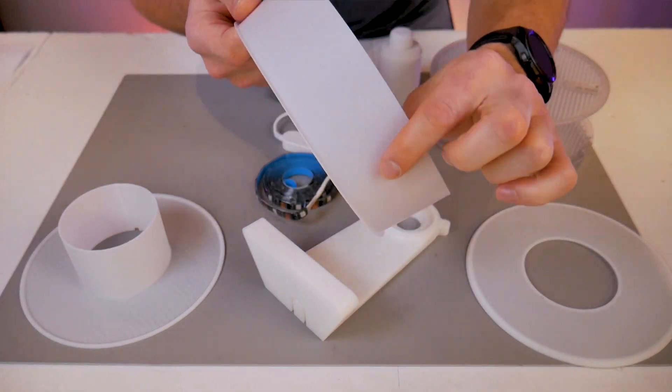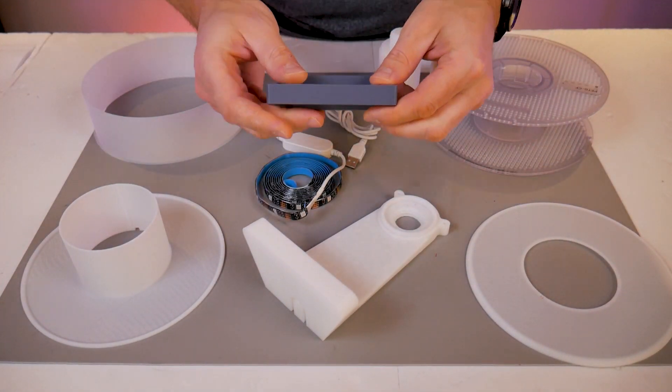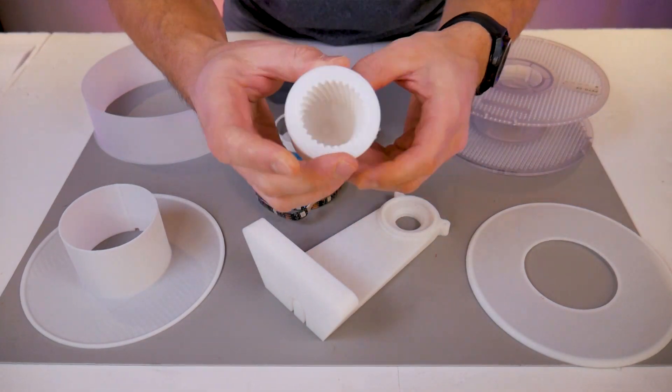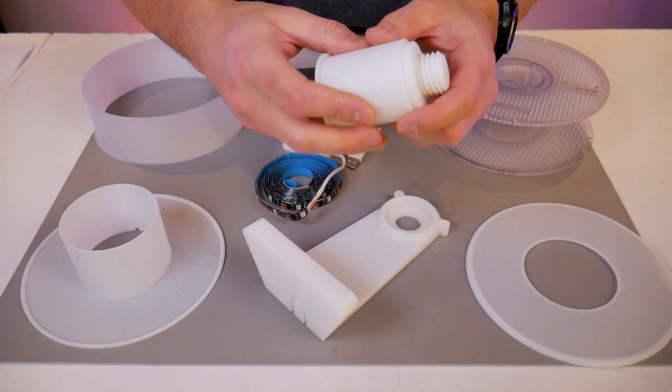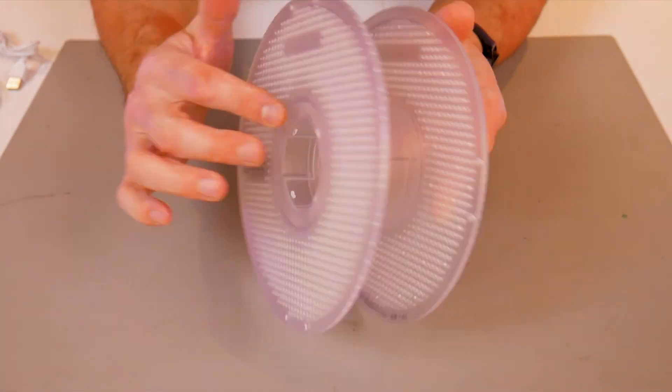I personally like this frosted or translucent looking type, but they also come in solid white. Next we have the single layer print where the light will shine through, meant to simulate the filament being on the roll. Then we have a color accent insert, the spool holder screw to lock things in place, and finally our RGB LED light strip.